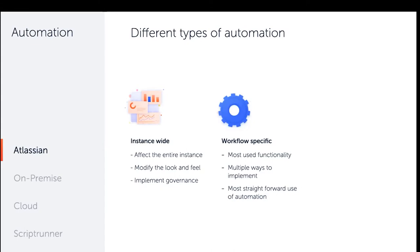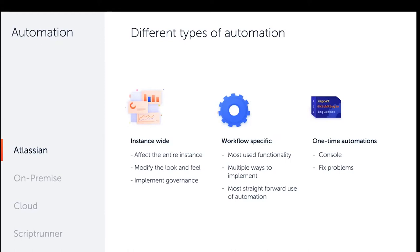Then there's workflow-specific automation — the most commonly used type. Tools like JMWE and JSU mostly focus on post functions and automations: if a field equals this then do that, if a due date is selected then do that. These are typically triggered by a transition from one status to another. Finally, there's one-time automation — like the script console — for fixing issues right now, such as bulk updates that require conditional logic.